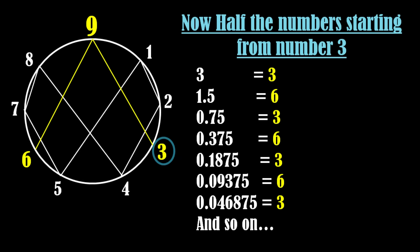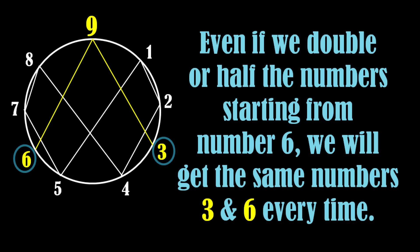Hence, whether we double or half the numbers, if we start with number 3, we get numbers 3 and 6 only. Even if we double or half the numbers starting from number 6, we will get the same numbers 3 and 6 every time. But surprisingly, even this time, 9 is absent in the sequence.